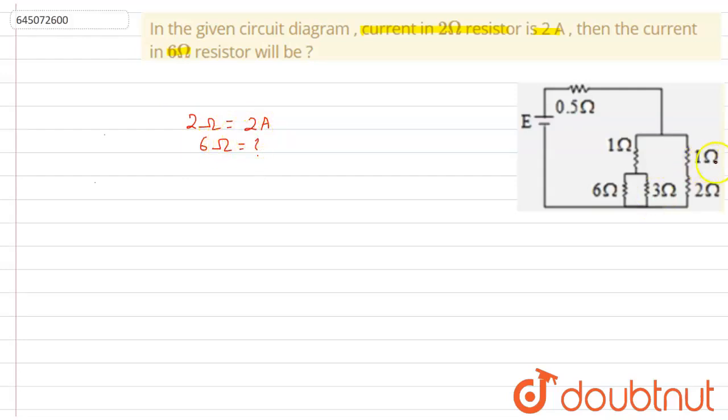We need to find the current through this. First of all, let's see what is happening here. We need to find the resistance first in the two branches. So if I consider this as point A, this common point as point B.